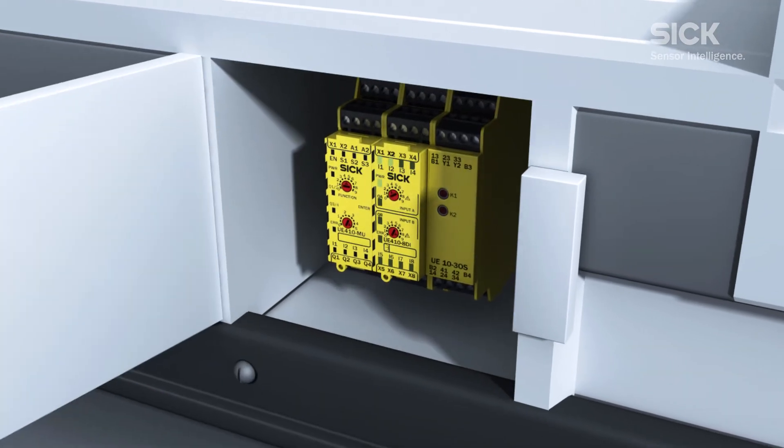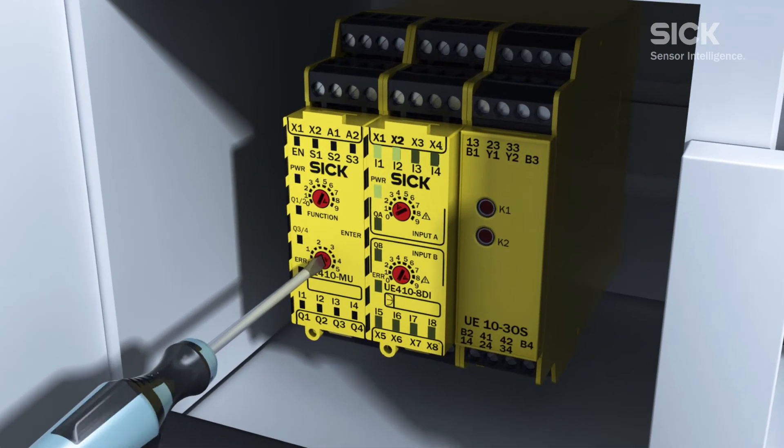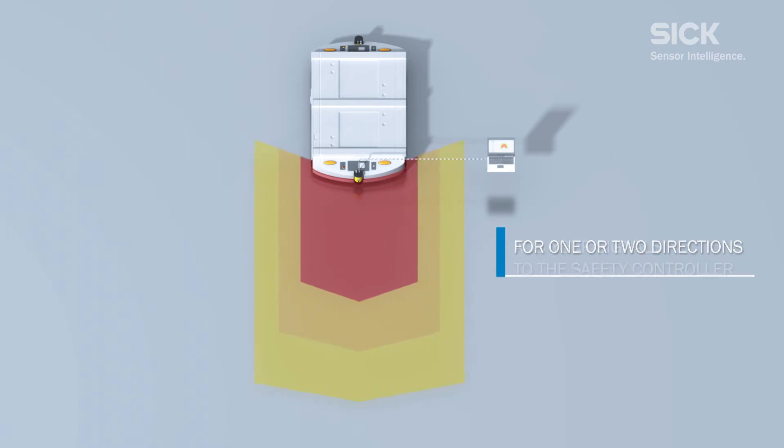The combination of the Flexi Classic and S300 allows for almost instantaneous configuration. SAFE AGV Easy is fully compatible with your existing safety concept and can be individually adjusted to your requirements.